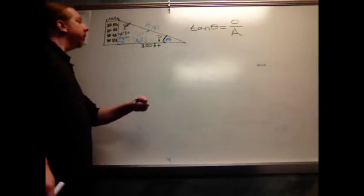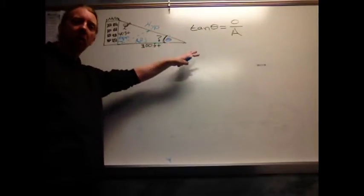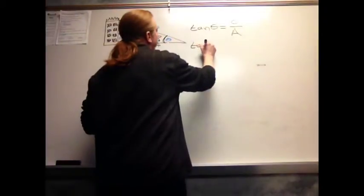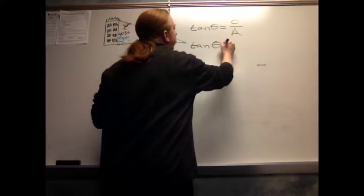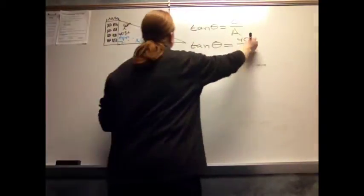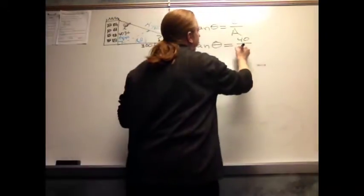So now what I'm going to do is I'm going to plug in what I know into that expression. So I'm going to say that the tangent of some angle is equal to the opposite, 40, divided by the adjacent, 300.